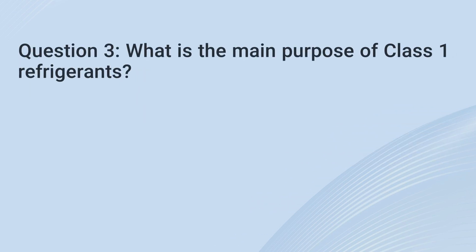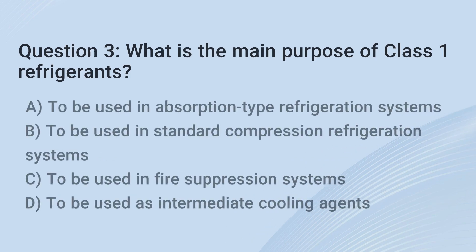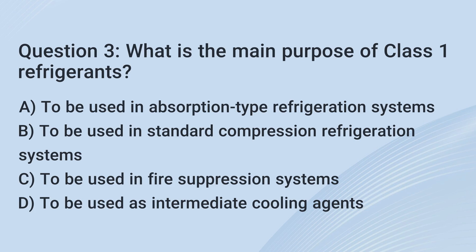Question 3. What is the main purpose of class 1 refrigerants? A. To be used in absorption type refrigeration systems. B. To be used in standard compression refrigeration systems. C. To be used in fire suppression systems. D. To be used as intermediate cooling agents.